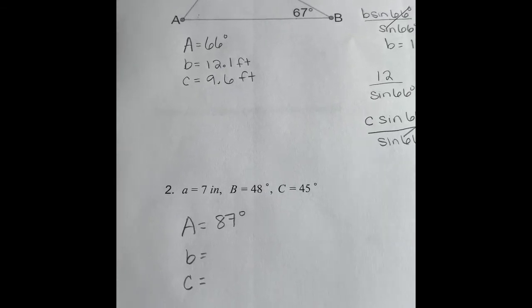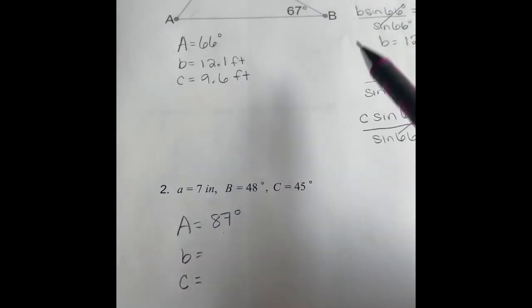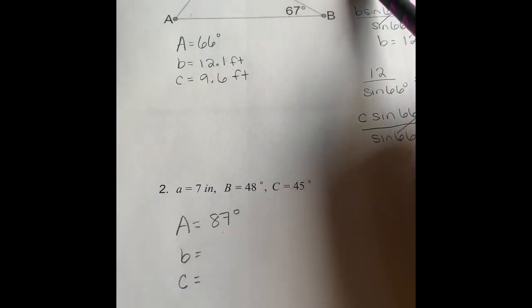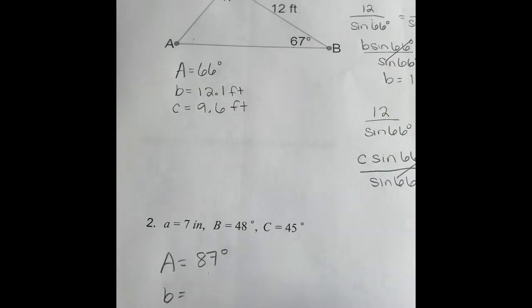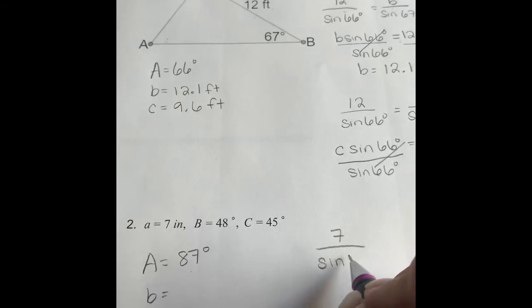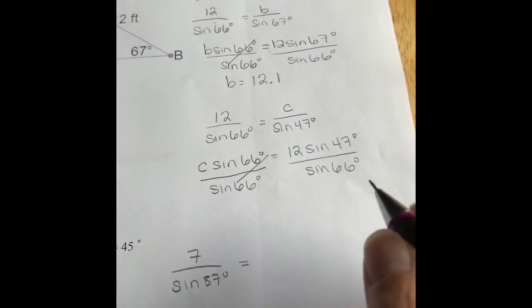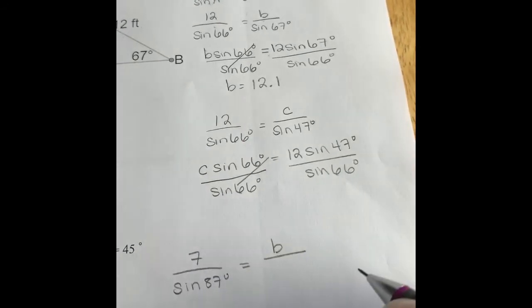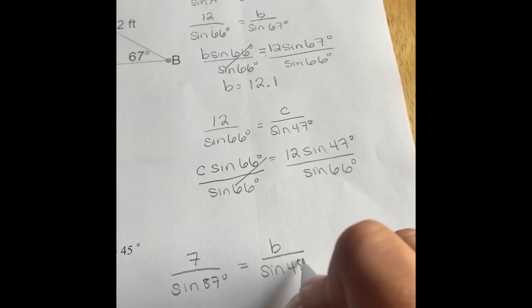Side B. So before we move on, again, we see that we know side A and angle A. So we definitely want to use that fraction again. And then we want to use the fraction that has B in it. So we have side A, which is 7, over the sine of angle A, which is 87 degrees, equals side B, which we're trying to find, over angle B. Sine of angle B is 48.